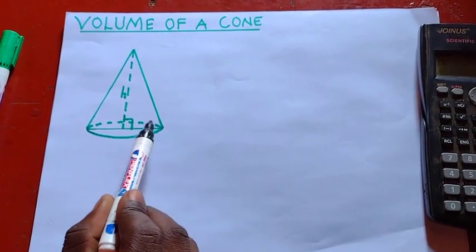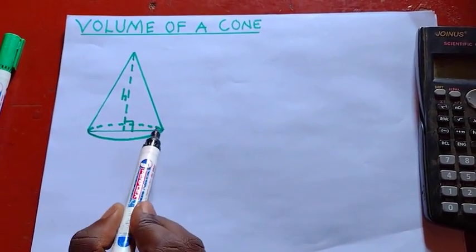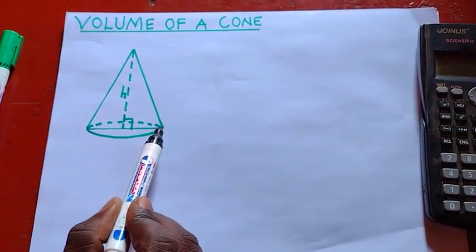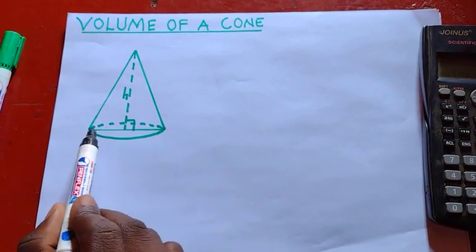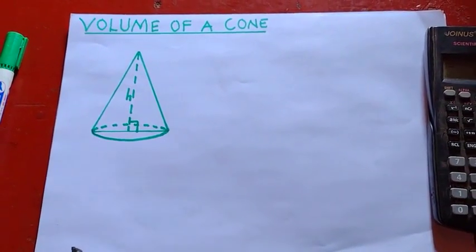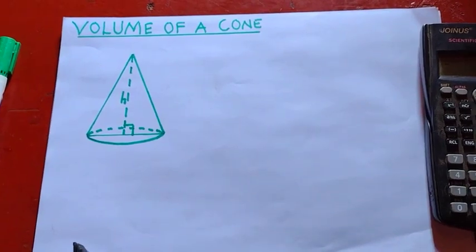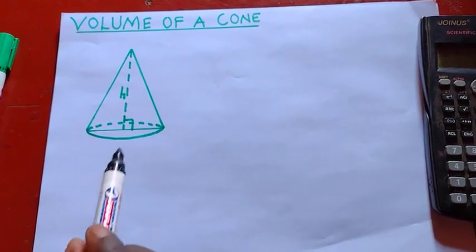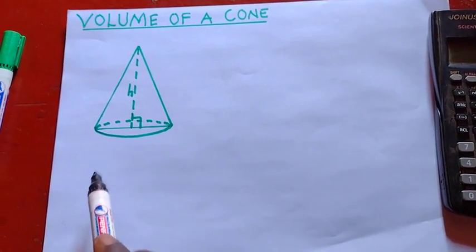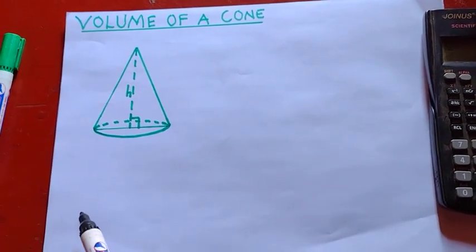Then on this circular base down here, we can see that there is a line that has passed from this part up to this end. This line is called the diameter. Okay, so if this is the diameter, it simply means that from here to there, you have the radius. Again, from here to there, you have the radius.